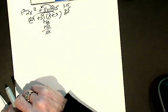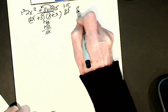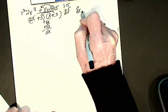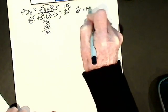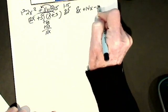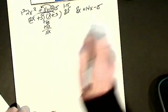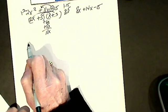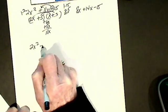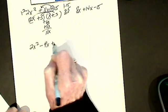Alright, let's do another one. Let's say I have 8x plus 14x minus 15. We'll save that one to number 3, it's a little harder. Alright, so let's do 2x squared minus 9x plus 9.